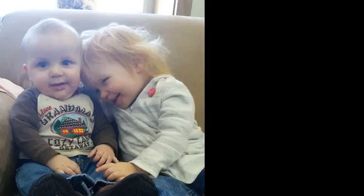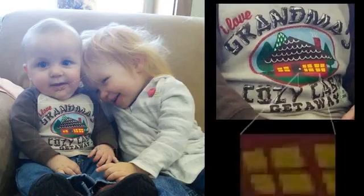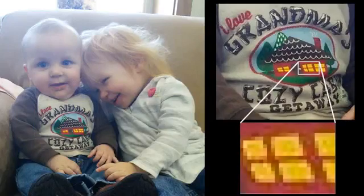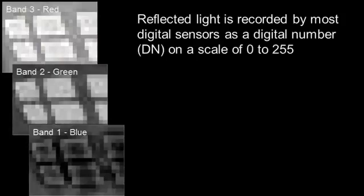I would like to demonstrate how this works within digital photography using a picture of my kids. This is Conrad and Sally. As you know, a digital image is made up of small pixels. And what we see here on Grandma's Cozy Cabin is a bunch of yellow windows on a red background. But that's not actually what the camera sees. As you can see, the camera actually detects the intensity of reflectance within three different bands.